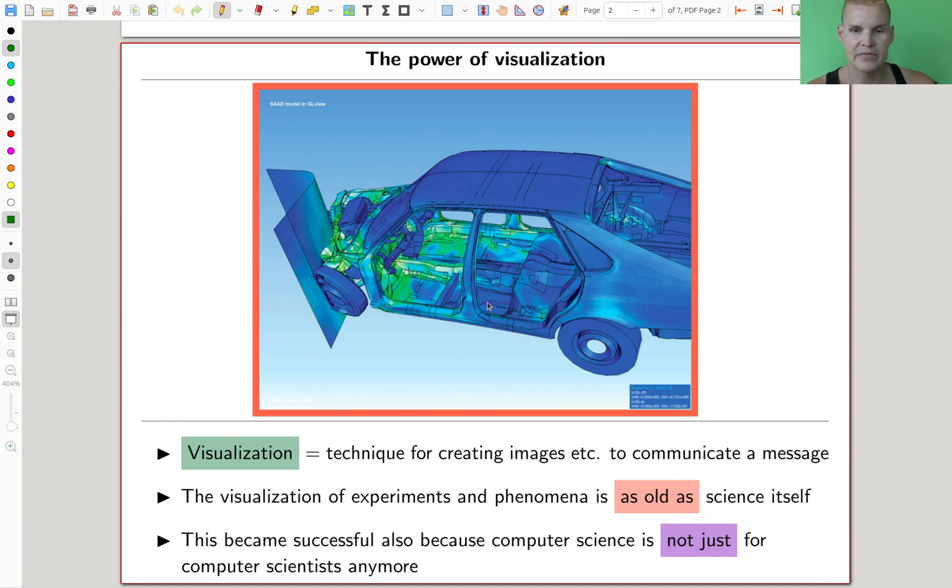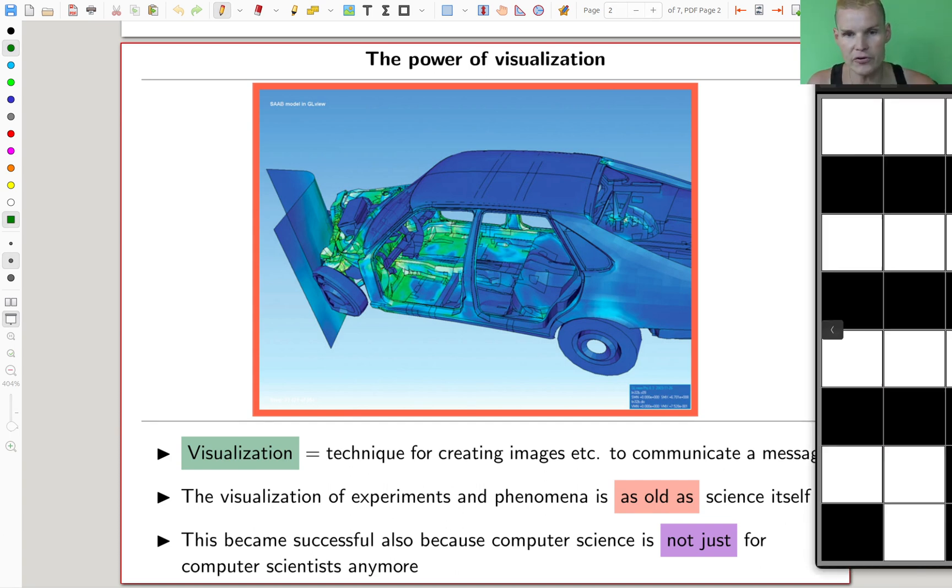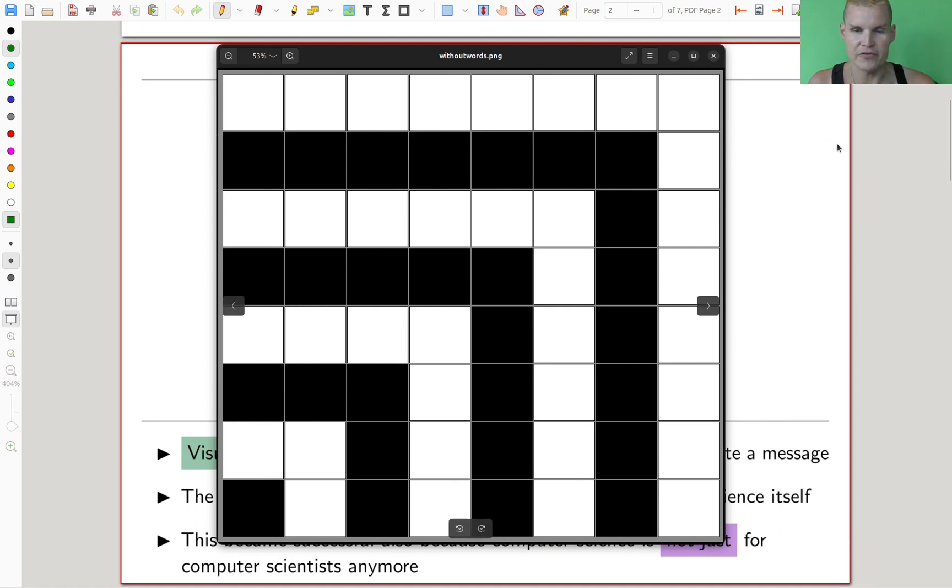There are many ways of doing this, and visualization of experiments and phenomena is as old as science itself. It's really crucial. Maybe something that is more math would be like a proof without words. So here's the proof without words. What am I proving here? I give you a few seconds to think about it.